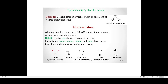Coming to the nomenclature: although the cyclic ethers have systematic IUPAC names, their common names are more widely used. When we name according to IUPAC, we add a prefix 'ox-' which shows the oxygen in the ring, and the suffixes '-irane', '-etane', '-olane', and '-ane' denote 3, 4, 5, and 6 atoms in a saturated ring. With a three-membered ring containing oxygen, it is properly called ethylene oxide or oxirane.